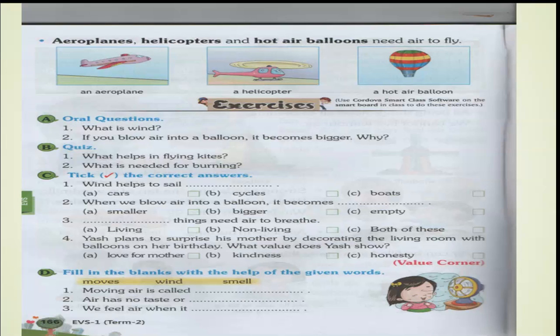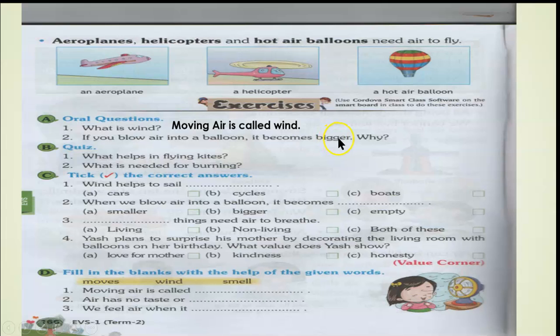Here we end our lesson — Air Around Us. Let's complete the exercise. First question: what is wind? Moving air is called wind. Second question: if you blow air into a balloon, it becomes bigger — why? Air occupies the space, or air takes up space. That's why the balloon becomes bigger.